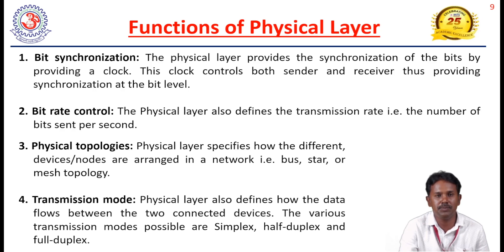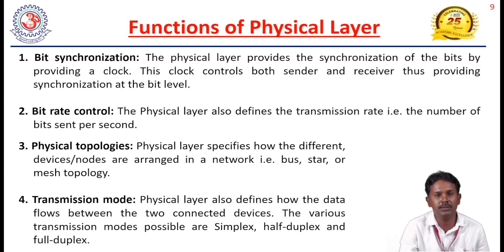Transmission mode specifies how data flows from one device to another. There are different transmission modes: simplex mode, half-duplex, and full-duplex. In simplex mode, data flows in only one direction. In full-duplex, data flows in two directions. Examples include telephone calls and walkie-talkies for half-duplex and full-duplex communications.